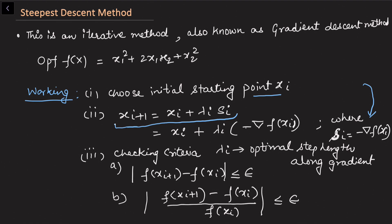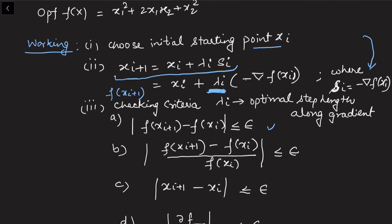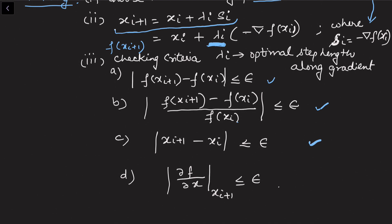So xi+1 = xi + λ * (−∇f(xi)), calculating the partial derivatives at the previous point. Once xi+1 is computed, we find the function value at xi+1, which will be dependent on λi, and solve for the optimal λi. The stopping criteria can be: |f(xi+1) − f(xi)| ≤ ε, or its relative version, or the difference between points is very small, or the partial derivative at the new point is less than ε.